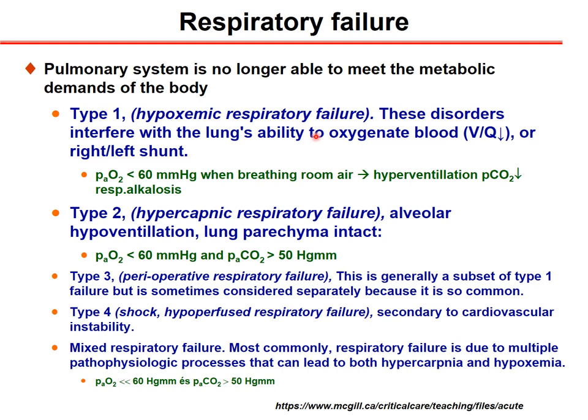Type 1 is hypoxemic respiratory failure, when the lung has some parenchymal problem and there is a ventilation-perfusion mismatch. Another possibility is a very severe condition with a right-to-left shunt, when venous blood directly enters the arterial circulation. In these disorders, the partial pressure of oxygen is less than 60 mmHg when breathing normal air, and the patient can compensate. This is due to the difference between the diffusion capability of oxygen and carbon dioxide.